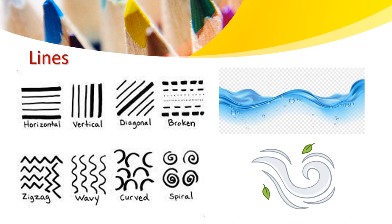Can you find anything around you, KG? You found a door! The door is straight, so a straight door is an example of lines — it has a straight line.